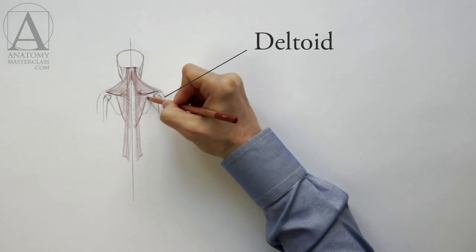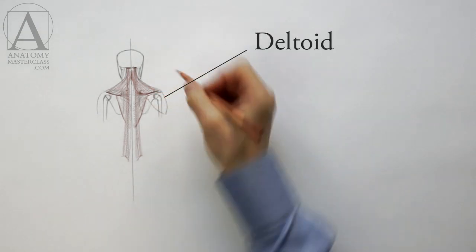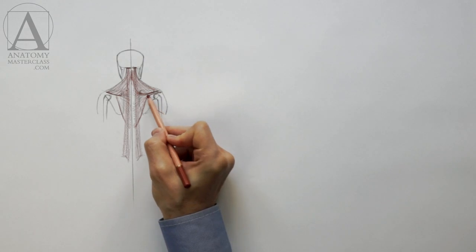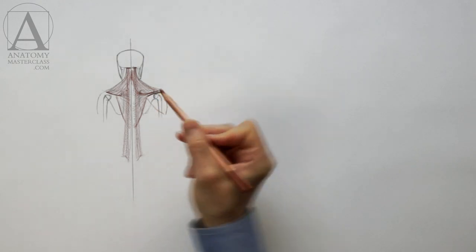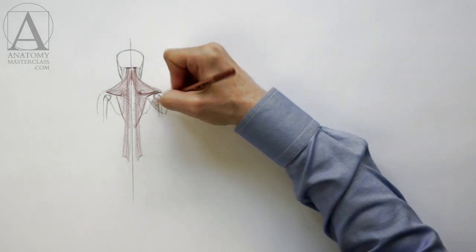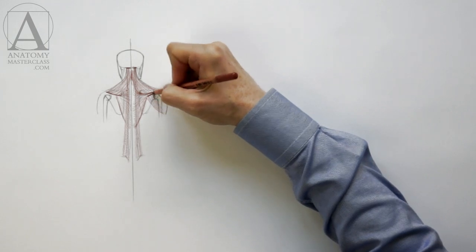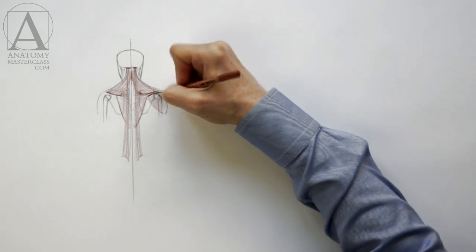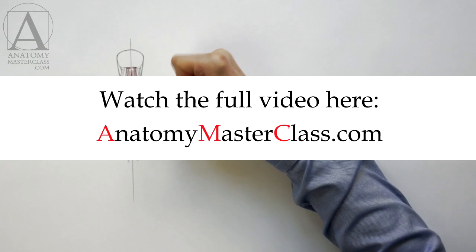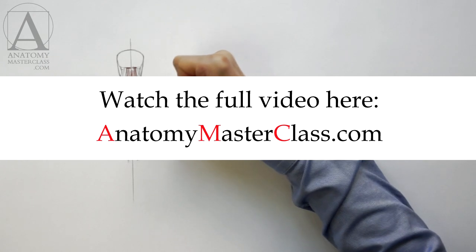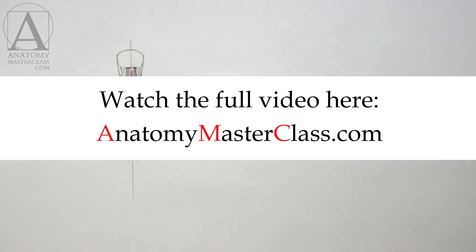The deltoid is another muscle that every figurative artist must know. On this drawing, we can see the back portion of this muscle. It begins from the spine of the shoulder blade and inserts into the middle of the humerus, or upper arm bone. The deltoid lifts the arm and rotates the arm outward.